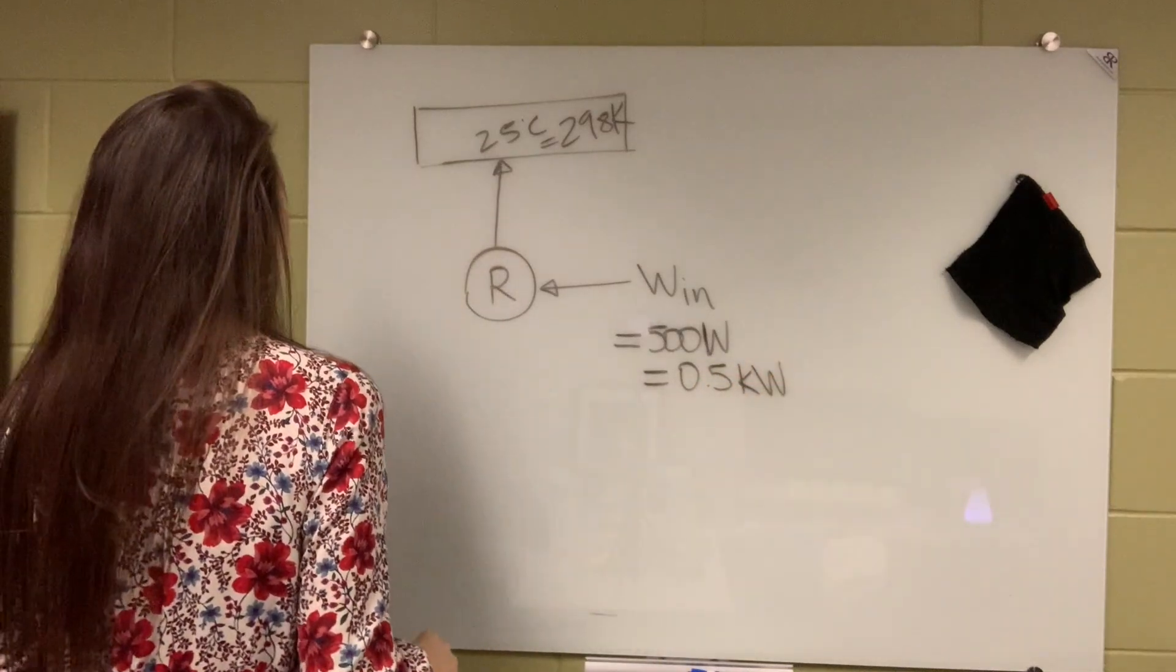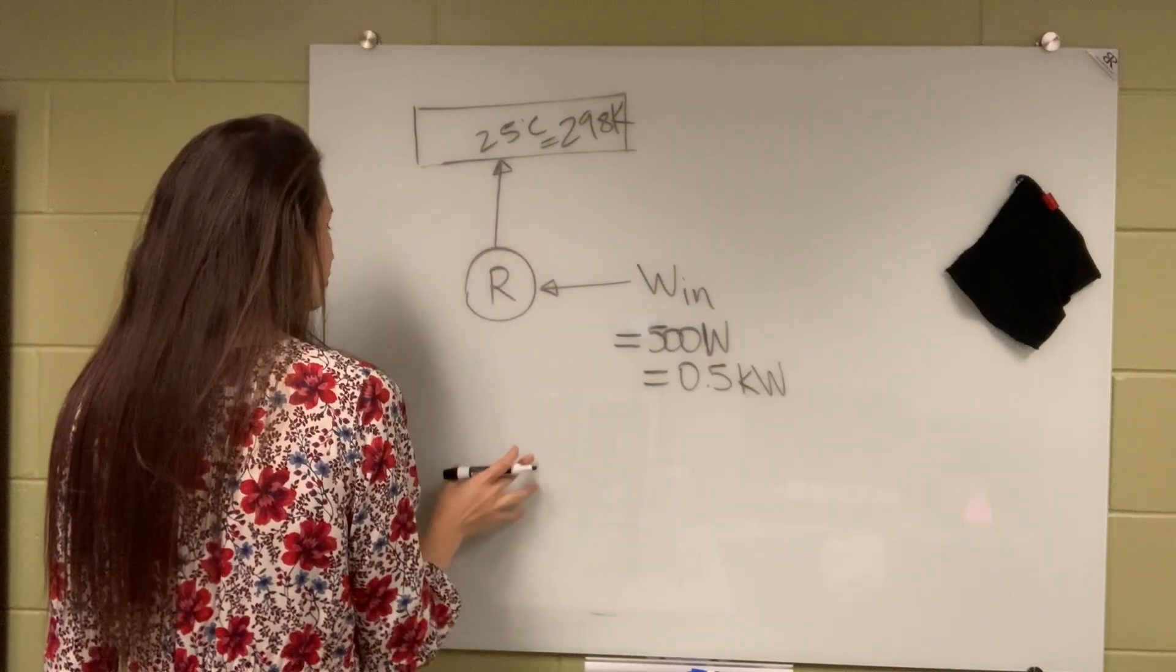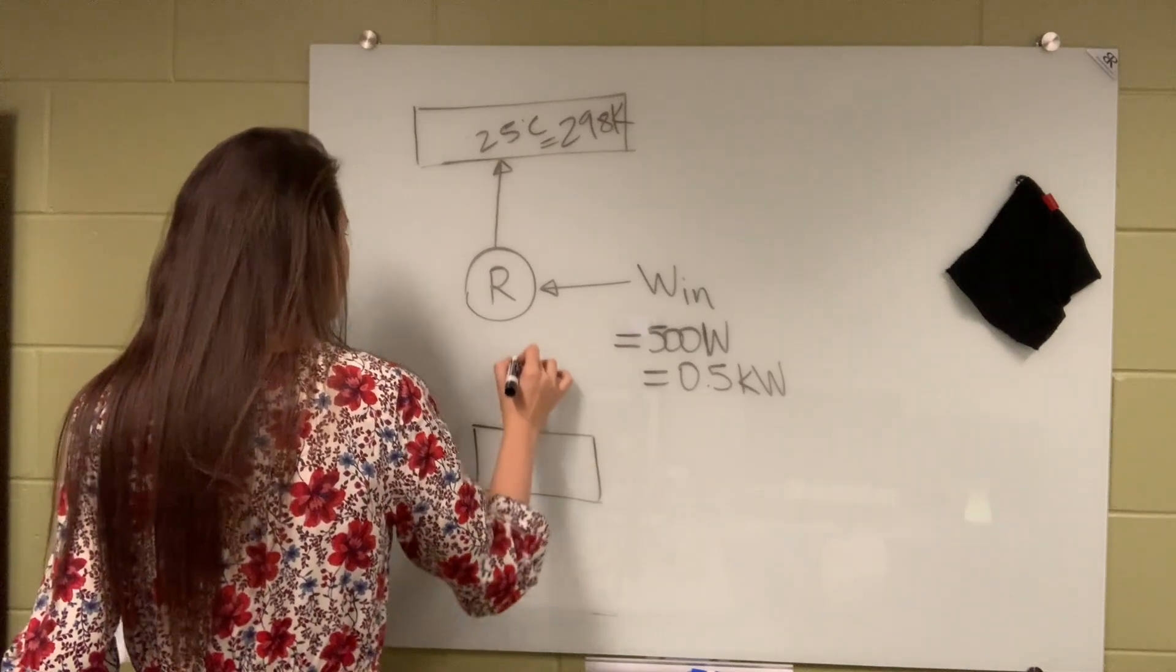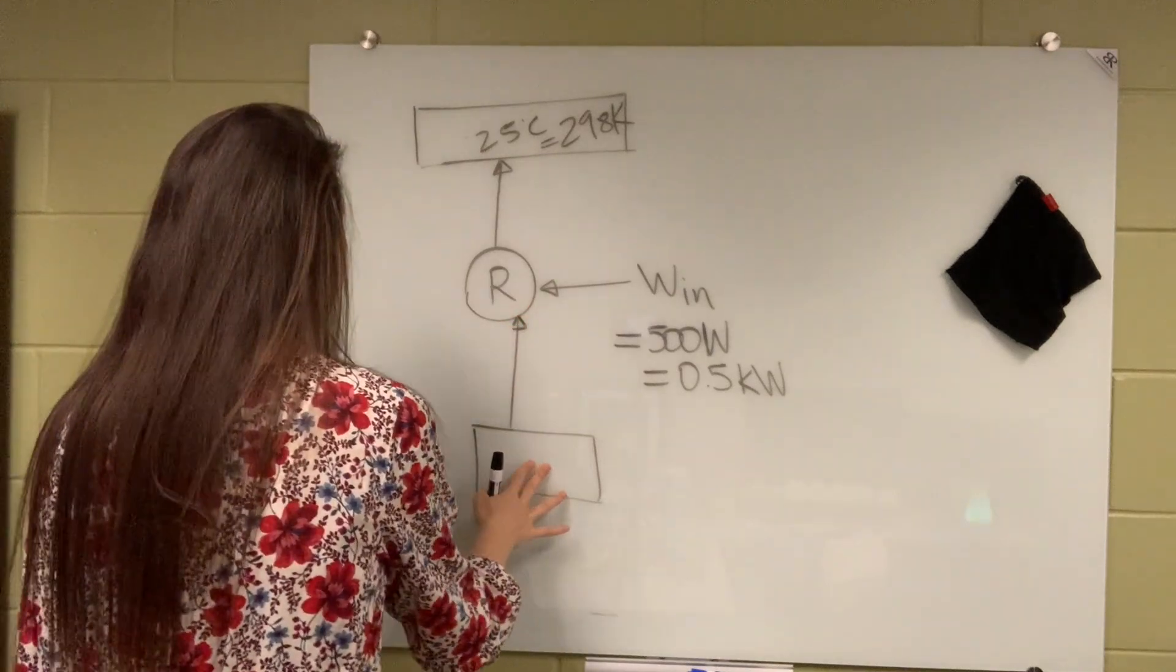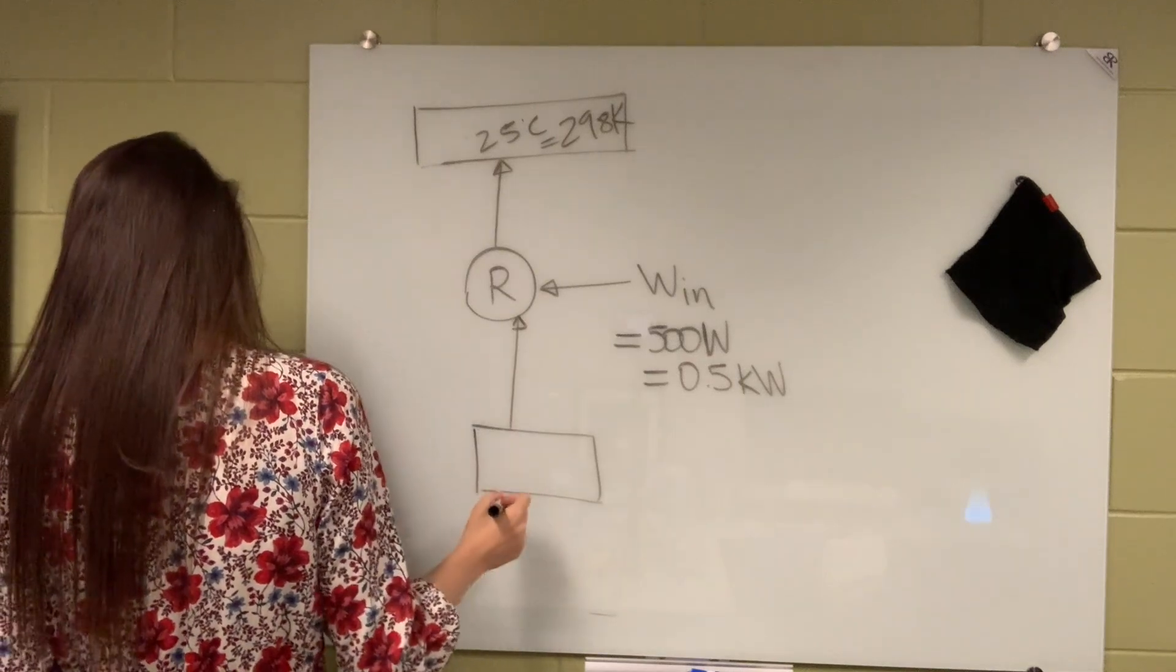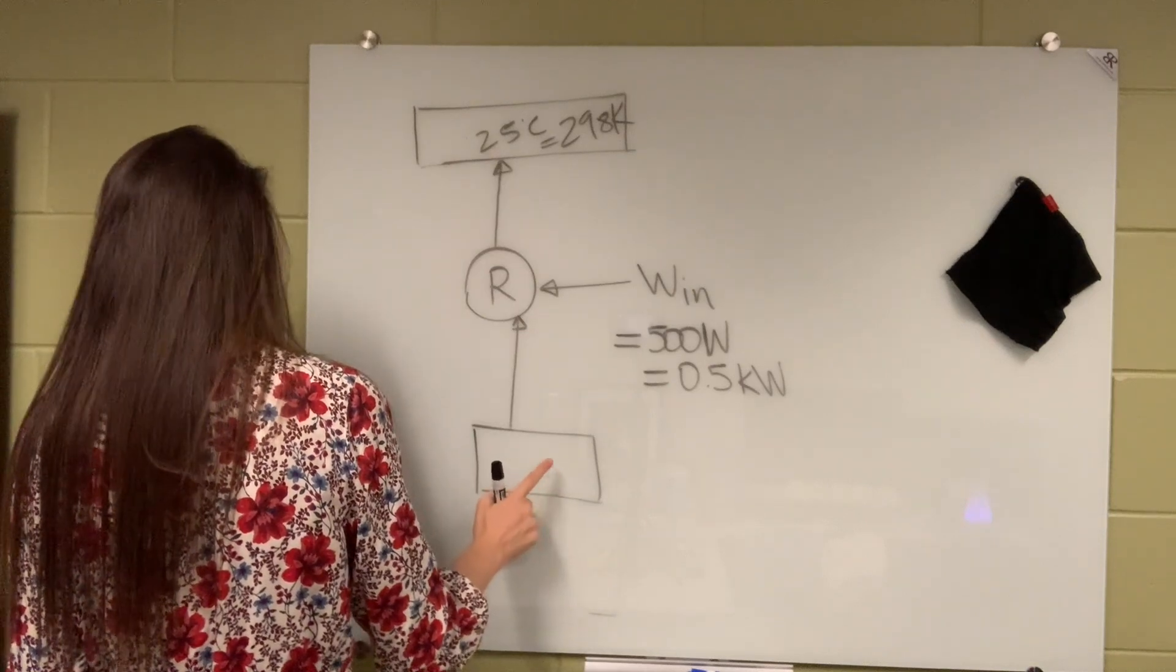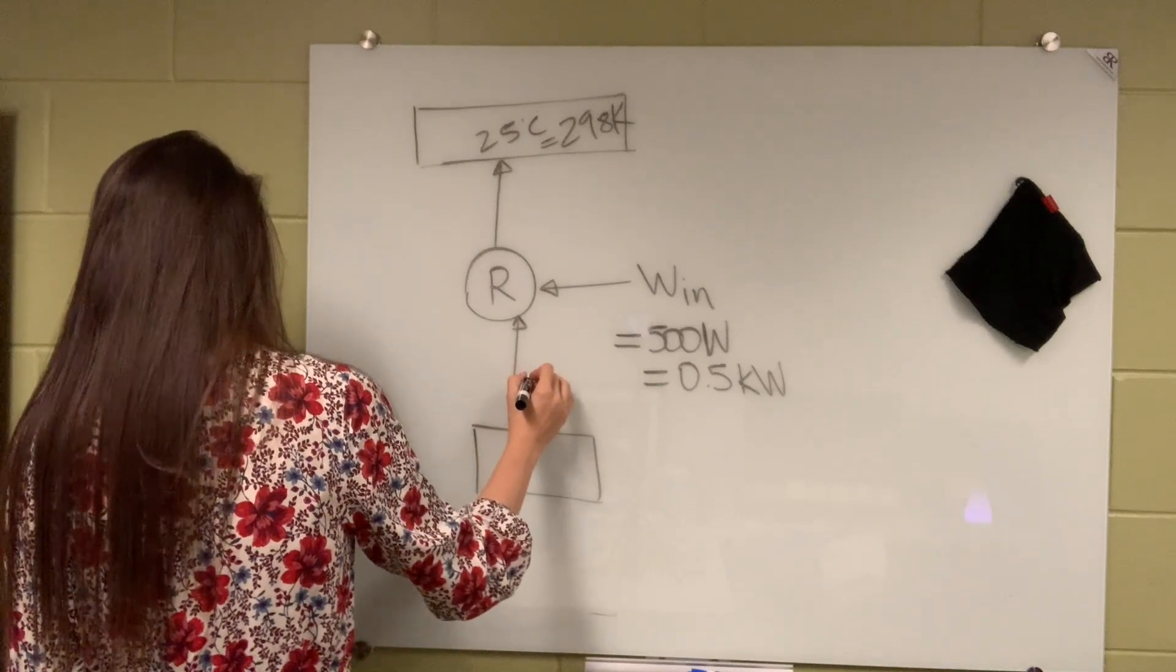So where does the refrigerator get its heat? It gets it from the refrigerated space, right, the freezer. It needs to get the energy from the refrigerated space, your freezer in the refrigerator. And the third question asks is find the temperature of the refrigerated space and the rate of heat removal.